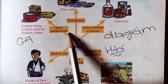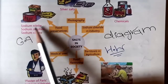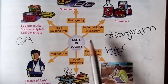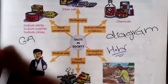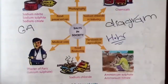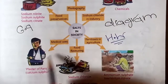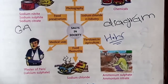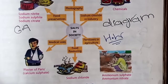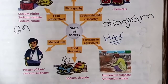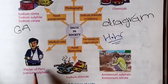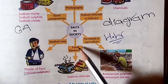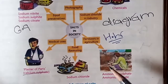Here you can see the table of salts used in society. Which salt is used in photography? Silver salt is used in photography. For food preservation, we use sodium nitrate, sodium sulfite, and sodium citrate. Which salt is used in medical uses?